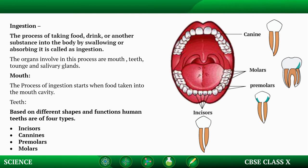Based on different shapes and functions, human teeth are of four types: incisors, canines, premolars, and molars. Incisors are the eight teeth in the front and center of the mouth — four on the top and four on the bottom. We use incisors for biting and cutting food.